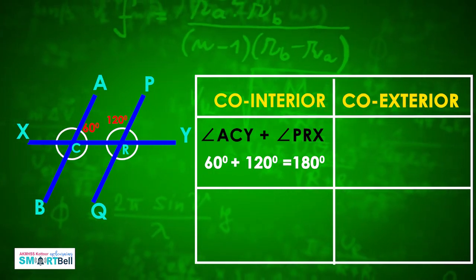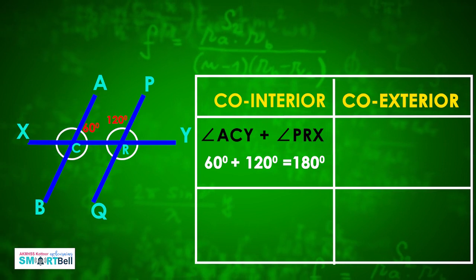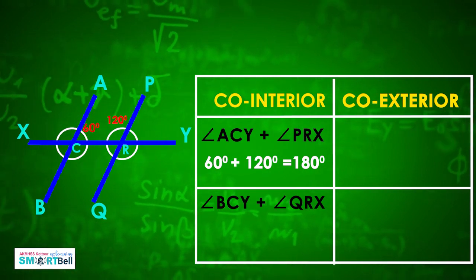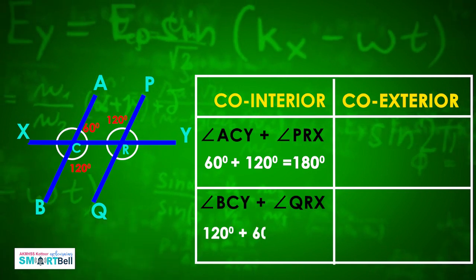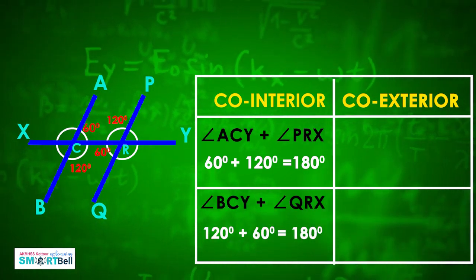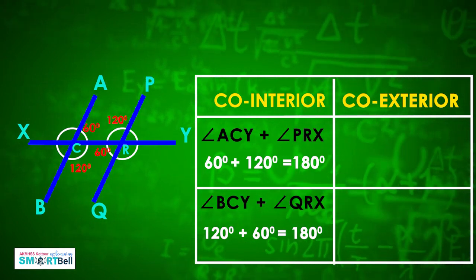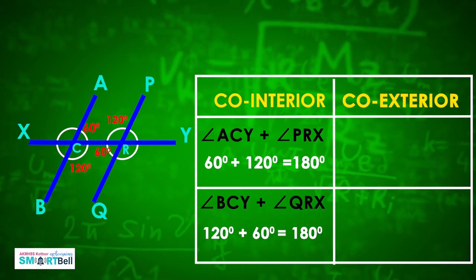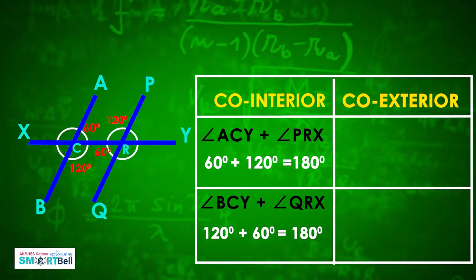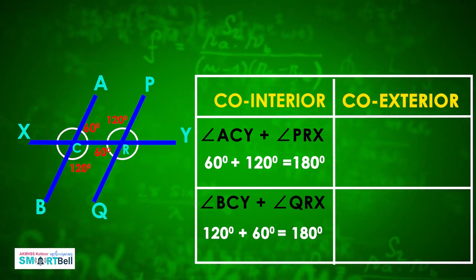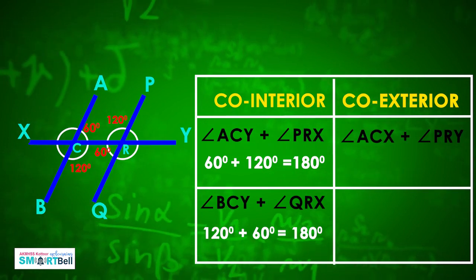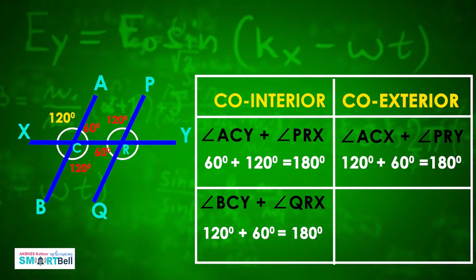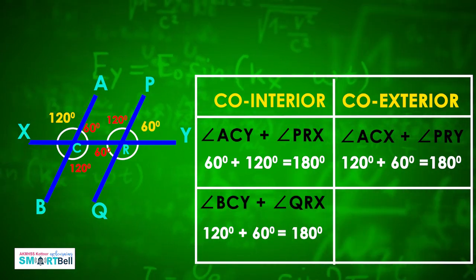Likewise, the second set of co-interior angles is angle BCY and angle QRX. We know angle BCY is 120 degrees and angle QRX is 60 degrees, so their sum is also 180 degrees.